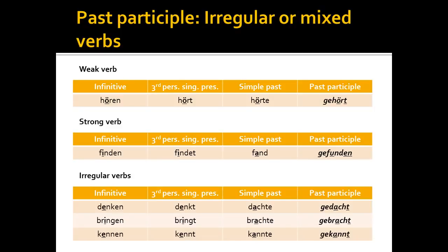Generally, irregular verbs can be found in the same list as strong verbs — at the back of the book if you have it, or through a search on the internet.